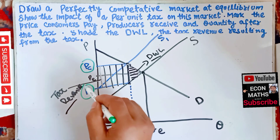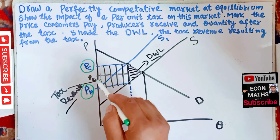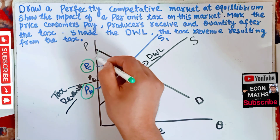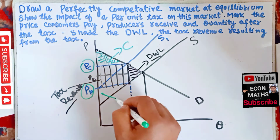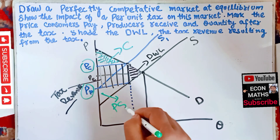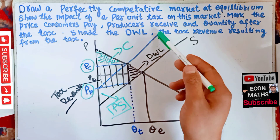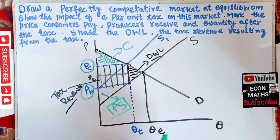Here we can see consumers will pay the price PC, producers will receive PP after paying this very amount of tax — this box of tax. This upper area will be the consumer surplus and this triangle will be the producer surplus. This is how we graph out this situation. I hope I make myself clear. Thank you.